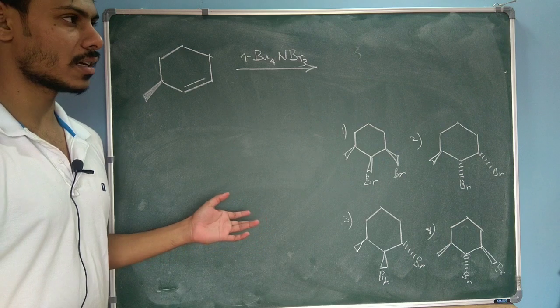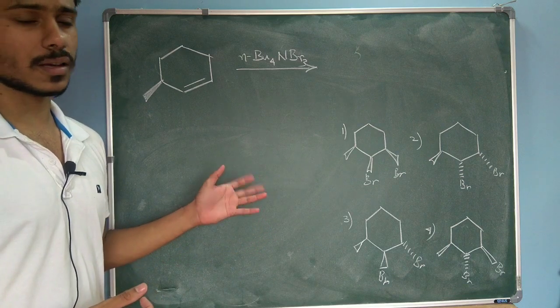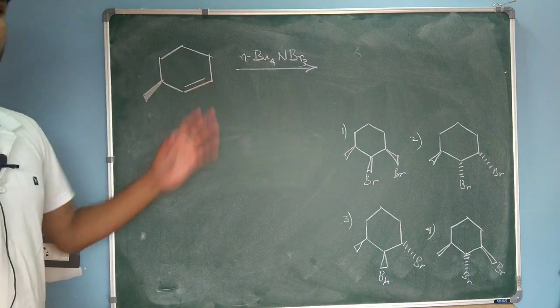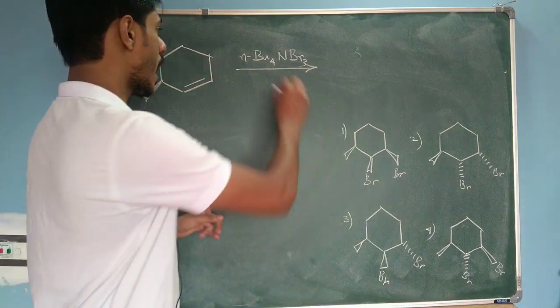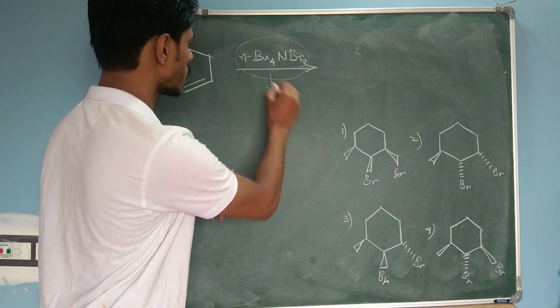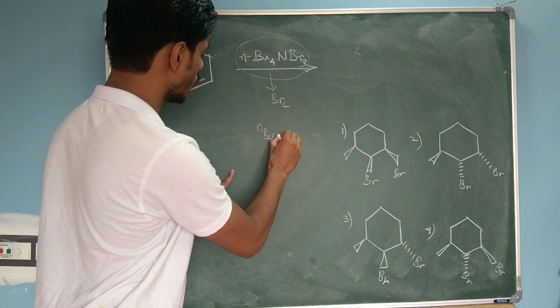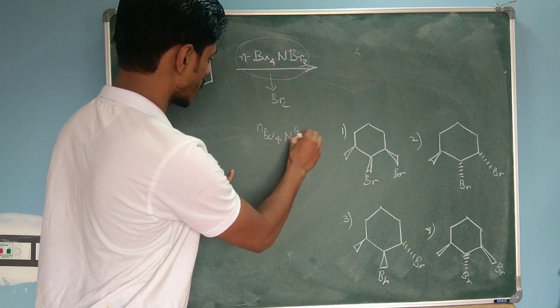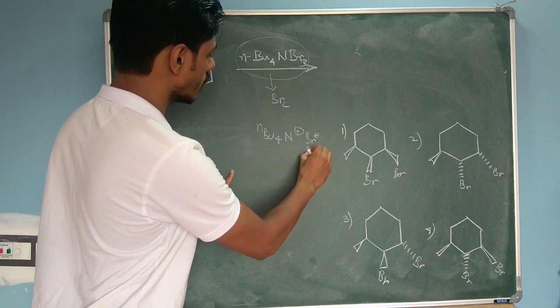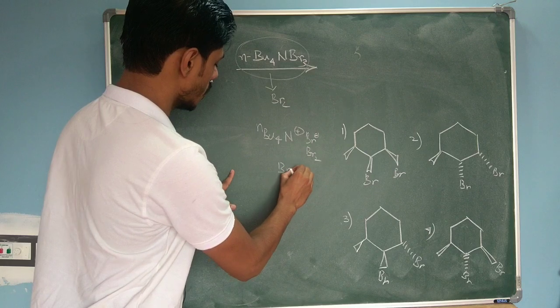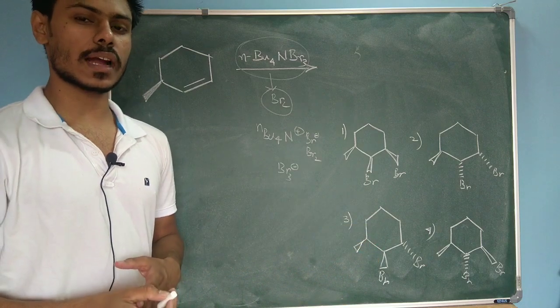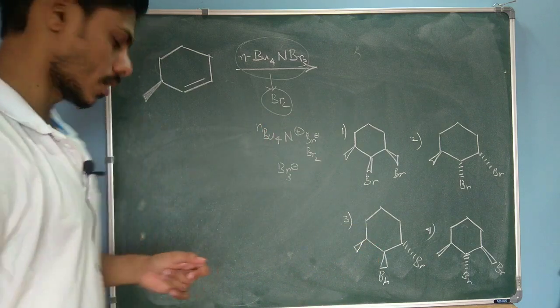So this is the question and it is from one of the NET exam papers. Basically it is an electrophilic bromination reaction and this particular reagent if you see, it is actually a bromine source, BR2 source. It is actually NBU4N+ right, so N is tetra coordinated and BR- and with it you have BR2, so basically it is BR3- and from that you are going to get this BR2. So this BR2 is the active reagent and it will do the electrophilic bromination reaction.